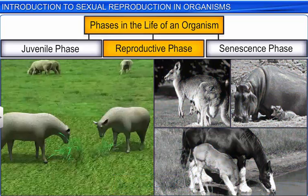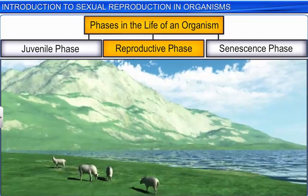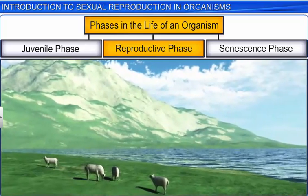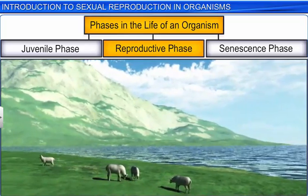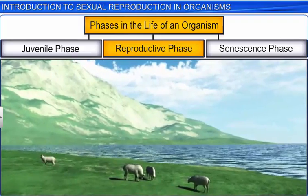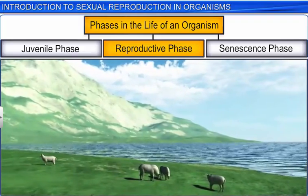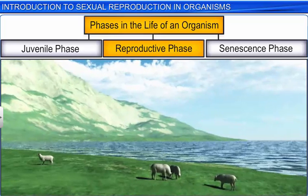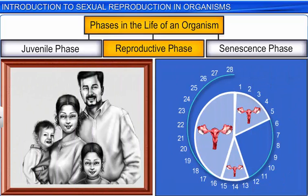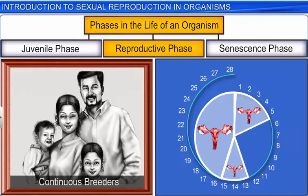Sheep, for instance, have spring as their favorable season for breeding. Breeding during spring allows for the birth of lambs at an optimal time — when the weather is warm and there is plenty of grass and water available in nature. In human beings, on the other hand, females experience the menstrual cycle and are active throughout their reproductive phase, and are therefore called continuous breeders.